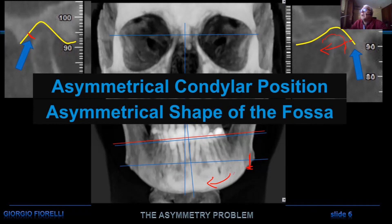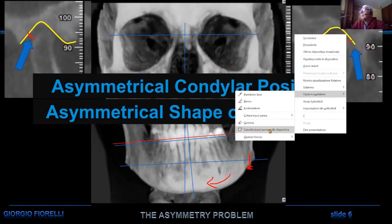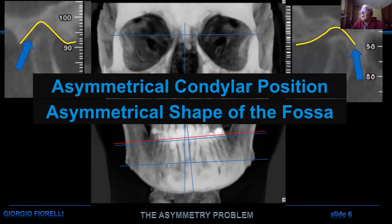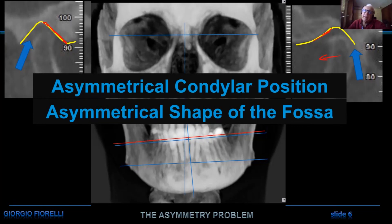Not only the condyle — we also have to check the fossa. In this case, we can see that the eminence has a very different slope: one side is more horizontal, the other is steeper. This is a very favorable condition, because if I am going to advance the condyle and have a rather flat eminence, this will help me. We will discuss this more in the second webinar about repositioning, but we have to start with some diagnosis first before treating any kind of asymmetry.